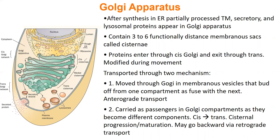Let's look at the structure of the Golgi apparatus. There are three different membranous sacs called cisternae: cis, medial, and trans. Cis is closest to the ER, trans is the furthest, and medial is in the middle — hence 'medial.' When you are going through the Golgi, you enter through the cis and exit through the trans.